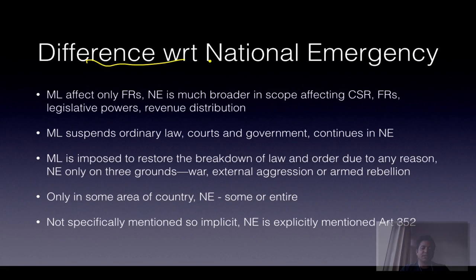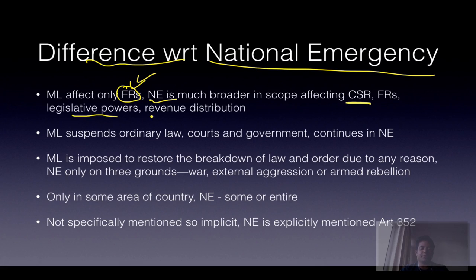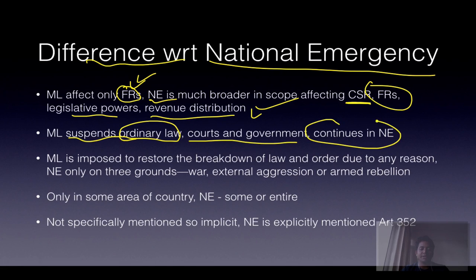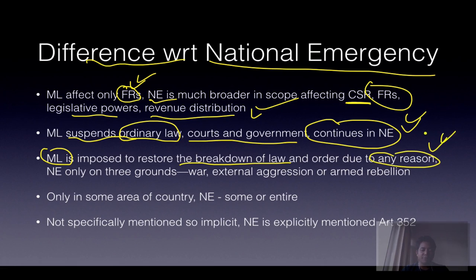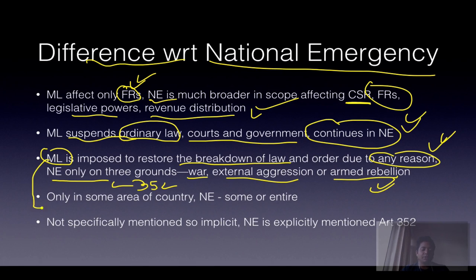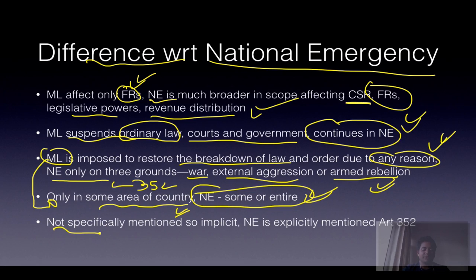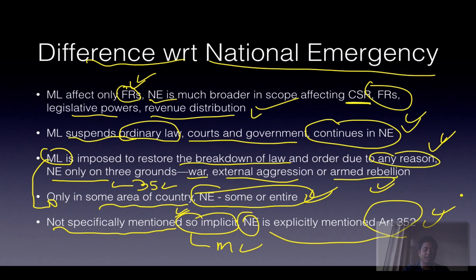Difference between martial law and national emergency: Martial law only affects fundamental rights, while national emergency affects central-state relationships, legislative powers, revenue, and also fundamental rights. Martial law suspends ordinary law, courts, and government; ordinary government continues during national emergency. Martial law restores breakdown of law and can be imposed for any reason, while national emergency under Article 352 can only be imposed on grounds of war, external aggression, or armed rebellion. Martial law is always imposed only in some area of the country, while national emergency can cover some area or entire country and is explicitly mentioned under Article 352.